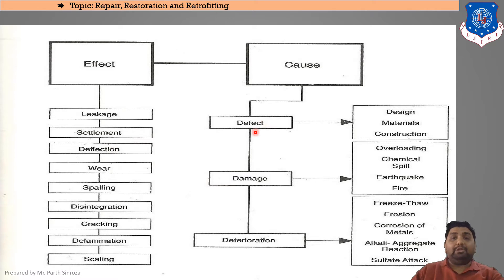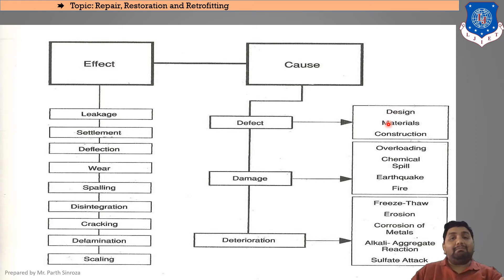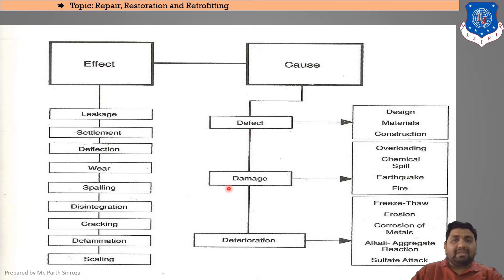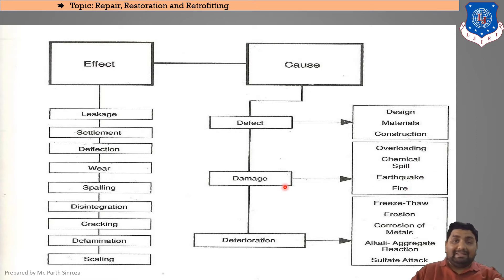To understand why these effects occur, we need to identify three basic things: defect, damage, and deterioration. A defect could be in the design itself, the material used, or the construction process — for example, if concrete is not properly cast. Damage could be due to overloading, improper factor of safety, chemical spill, earthquake, or fire.